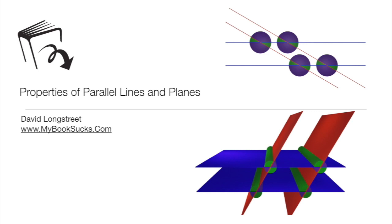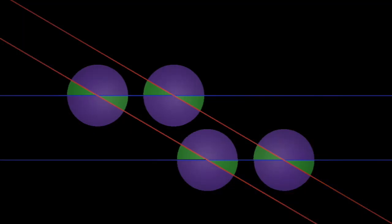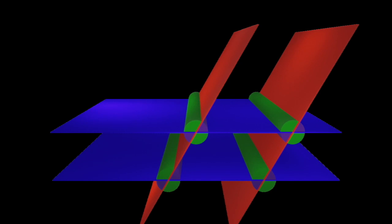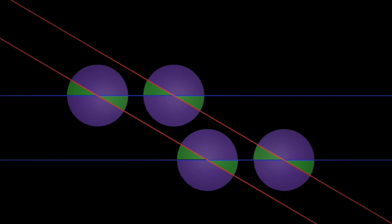In this video, I'm going to discuss the properties of parallel lines and planes. First, I'll discuss the properties of parallel lines, which is two-dimensional space. Then I'll discuss properties of parallel planes, which is three-dimensional space. Up first is properties of parallel lines.